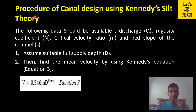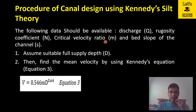Now let us go through the procedure of canal design using Kennedy's Silt Theory. The following data should be available: the discharge Q — how much discharge the canal should carry; the rugosity coefficient N, which depends on the type of soil; the critical velocity ratio m, which also depends on soil type; and the bed slope of the channel, since Kennedy does not provide an equation for determining bed slope.